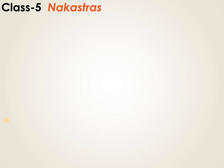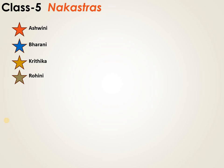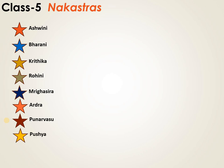The first nakshatra that appears is Ashwini. Second one is Bharani. Third is Kritika. Fourth one is Rohini. Fifth one is Mrigashira. Next one is Ardra. Next is Punarvasu, Pushya, and Aslesha.